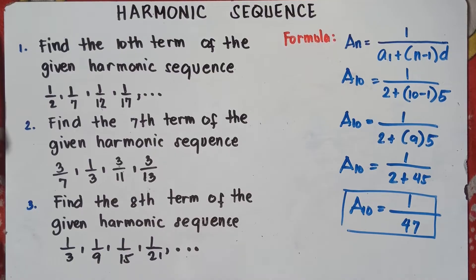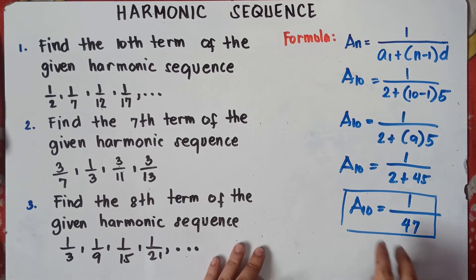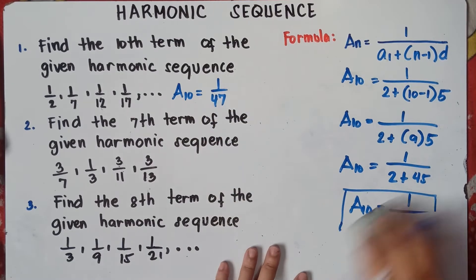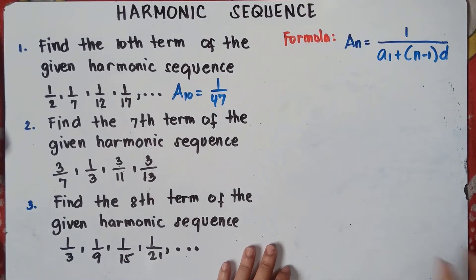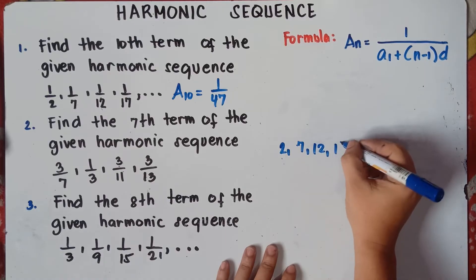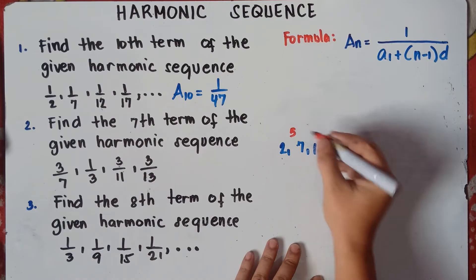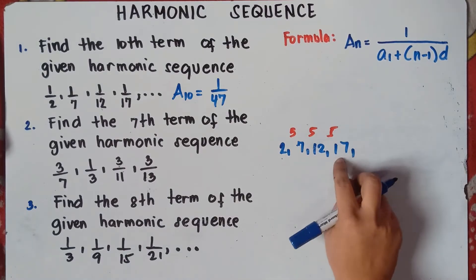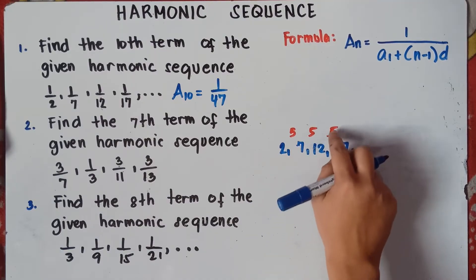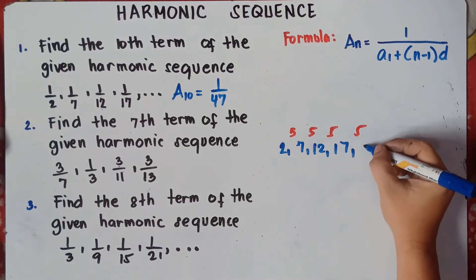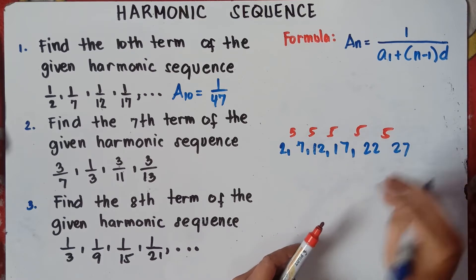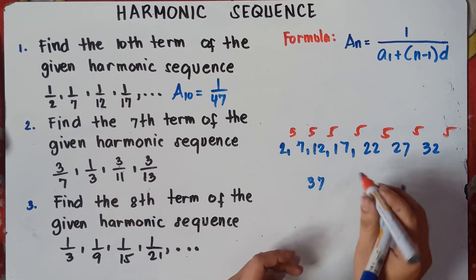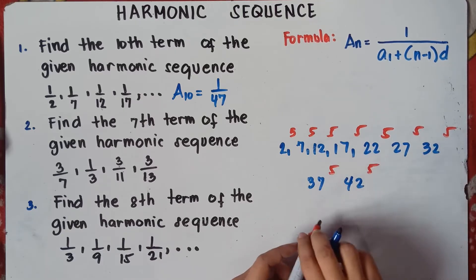Let's check it manually. Using the arithmetic sequence 2, 7, 12, 17 — the common difference is 5. We add 5 each time: 17 plus 5 is 22, 22 plus 5 is 27, 27 plus 5 is 32, 32 plus 5 is 37, 37 plus 5 is 42, 42 plus 5 is 47.